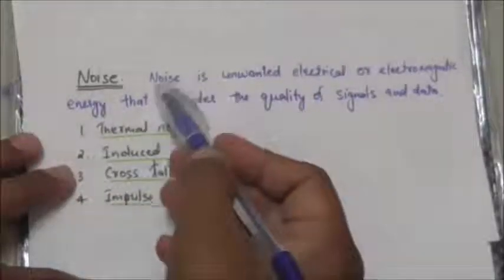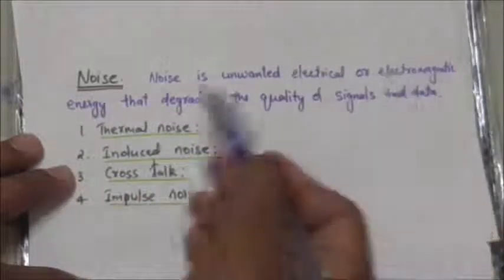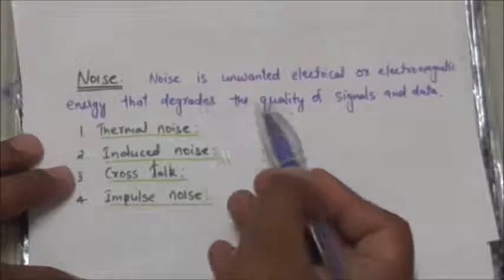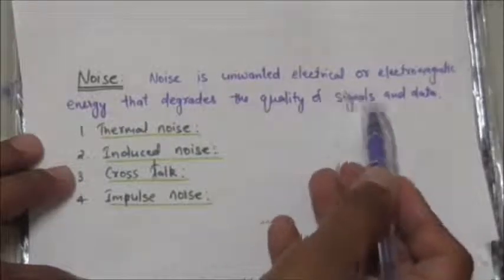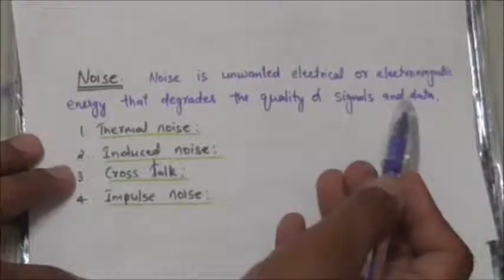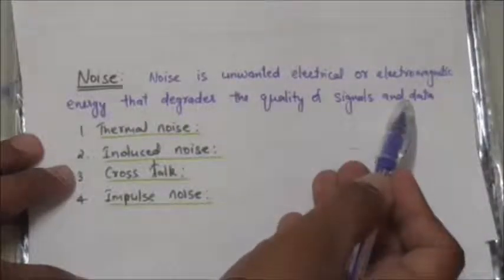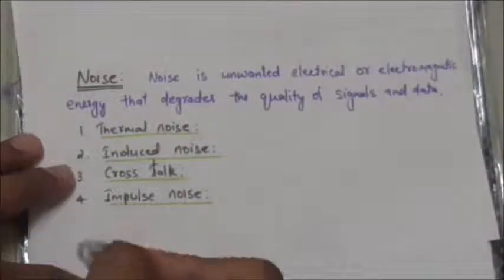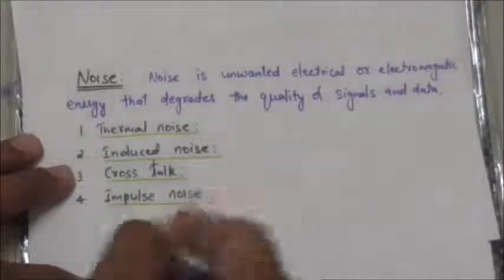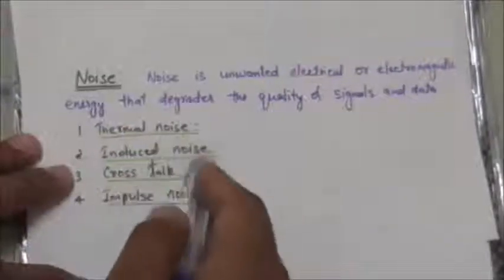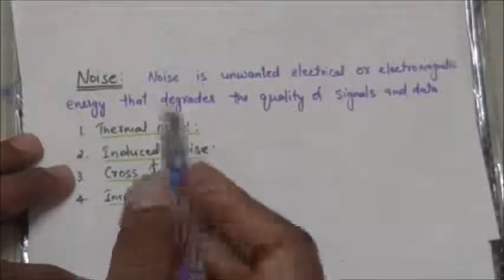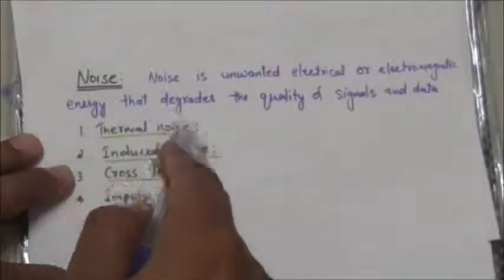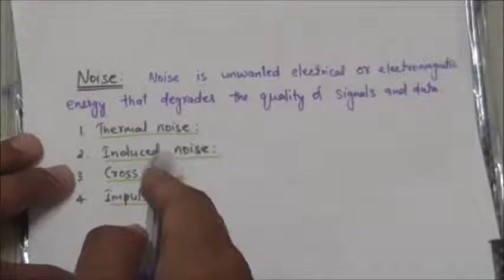Another cause of impairment is noise. Noise is unwanted electrical or electromagnetic energy that degrades the quality of signals and data. Several types of noise may corrupt the signal: thermal noise, induced noise, crosstalk, and impulse noise.